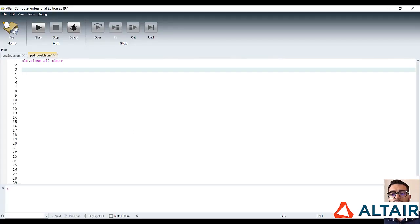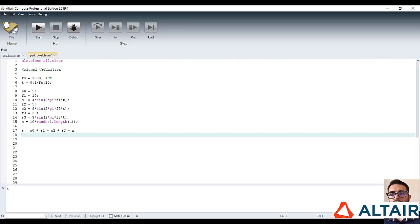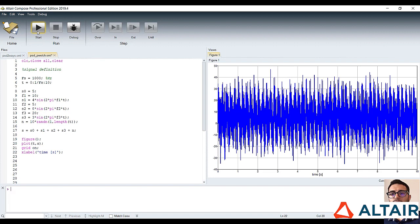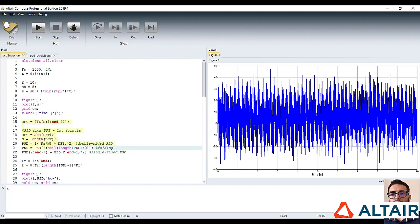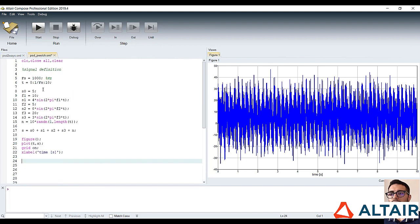So, let's consider another signal made up of three sine waves and with a mean value different from zero. This time, let's add also some random noise and let's visualize it. Now, let's compute the power spectral density with the first formula we have used before. And to do that, just copy and paste the relative part of the previous script. Let's plot it.